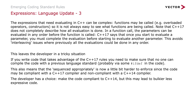Once we start evaluating a parameter, we must finish evaluating that parameter. But this does leave developers in a tricky situation, which is why 'appropriately' is used in the rule. If you write code that takes advantage of C++17 rules, we probably need to make sure no one can compile the code with the previous language standard, perhaps with some hash-ifdefs in the code. It also means that 'sequenced appropriately' is a little bit harder to enforce because now it depends on which version of the language you're using — it may be compliant with C++17, but not with C++14.